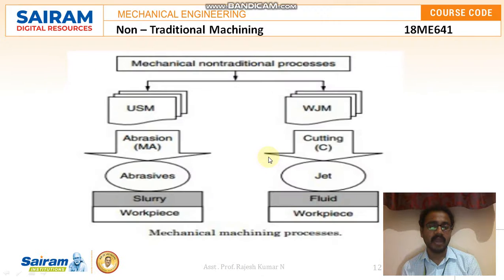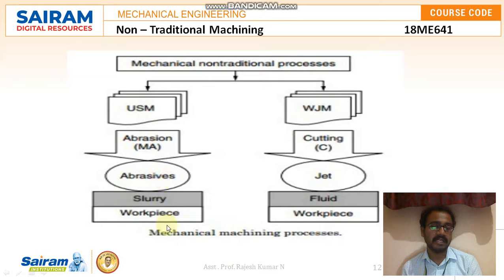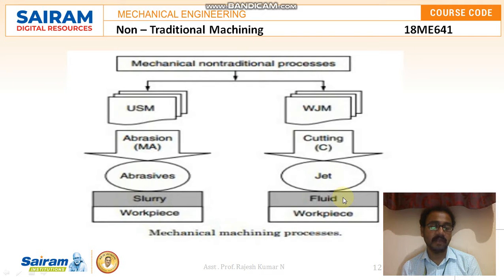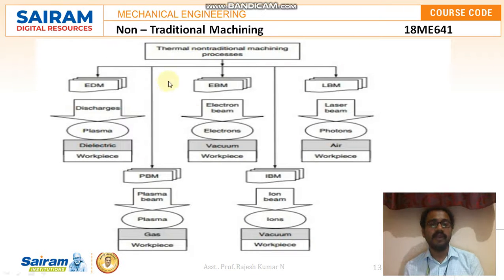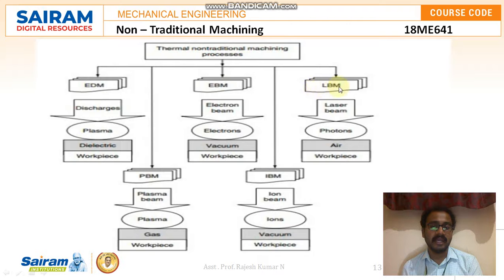Looking at mechanical non-traditional machining processes: there are mainly two types — ultrasonic machining and water jet machining. In ultrasonic machining, abrasives are used in the form of slurry on the workpiece. In water jet machining, a jet of water or fluid is used and excess material is removed with the help of that fluid. Under thermal non-traditional machining processes, we have electrical discharge machining, electron beam machining, laser beam machining, ion beam machining, and plasma beam machining.